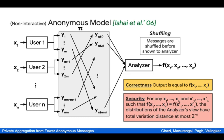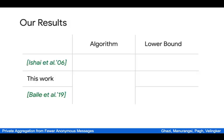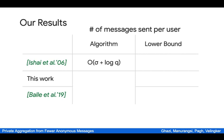the distribution of the analyzer's view must have total variation distance of at most 2 to the minus sigma, where sigma is our security parameter. In this work, we focus on the task of aggregation, in which each input x_1 to x_n comes from a field F_q and the goal is to compute the sum x_1 plus x_2 and so on to x_n. This task was also studied in the original paper of Ishai et al.